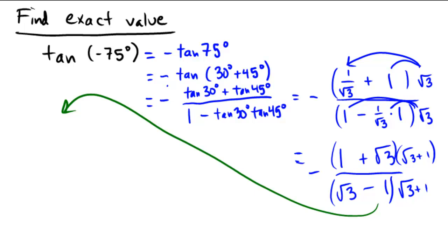In the numerator, we have a perfect square here, 1 plus radical 3 squared. So I'm going to view that as 1 plus 3, which would be 4. And then the outsides, the outside and the inside would be plus 2 radical 3.